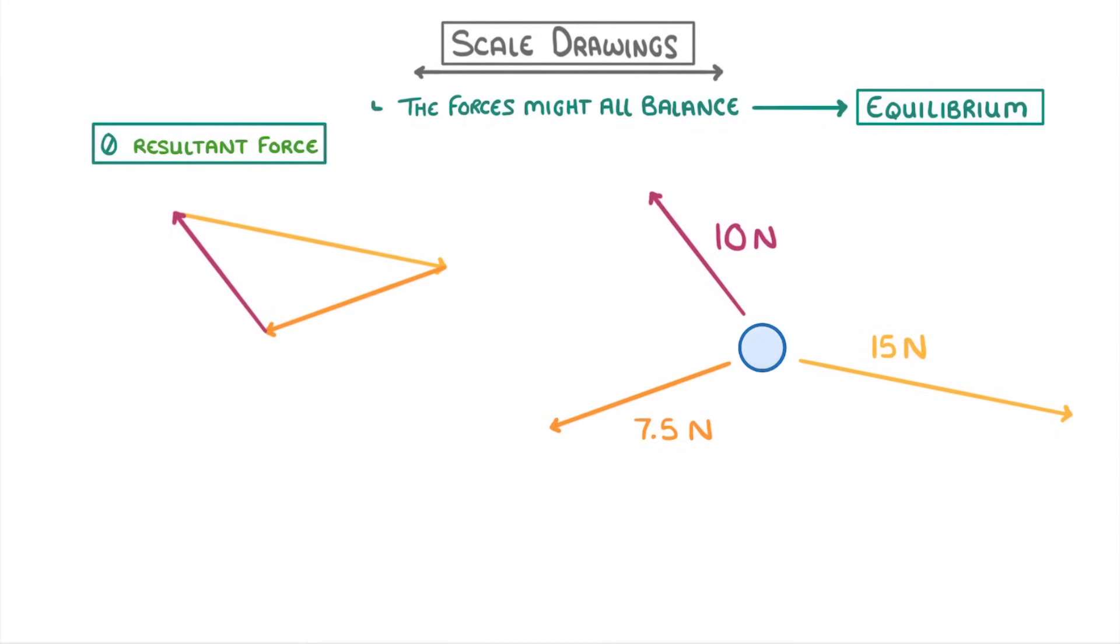Don't worry about arranging the arrows in any particular order though. As long as you put them all tip to tail, then you'll be fine. For example, we could have arranged them like this instead. They still form a perfect triangle, which means there's no resultant force.